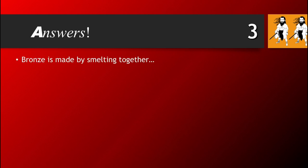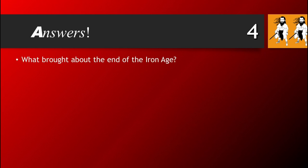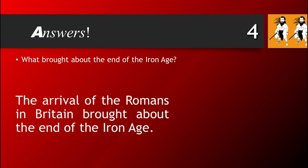Question 3: Bronze is made by smelting together copper and tin. Well done if you said that. Question 4: What brought about the end of the Iron Age? The answer is the arrival of the Romans.